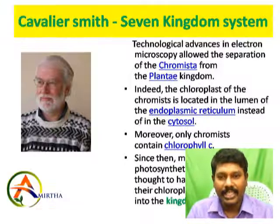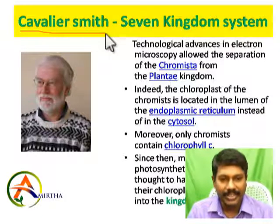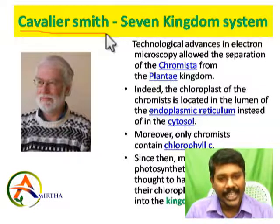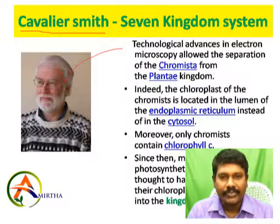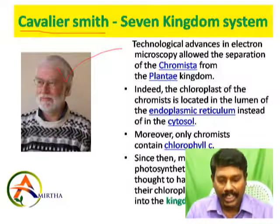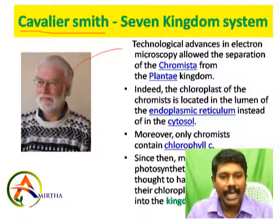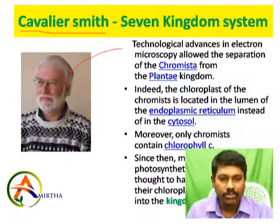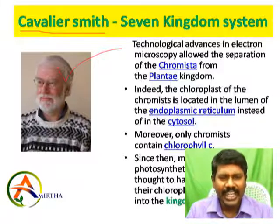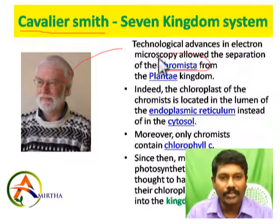Next is the seven and eight kingdom system of classification, proposed by Cavalier-Smith. Using the electron microscope, he was able to study the plant's internal cell structure. He observed some organisms where the chloroplast is present in the endoplasmic reticulum rather than in the cytoplasm.